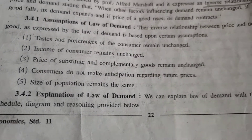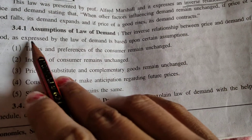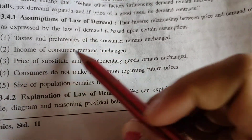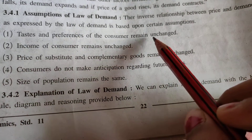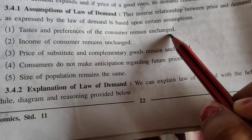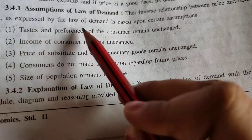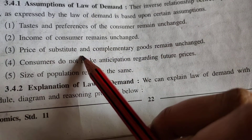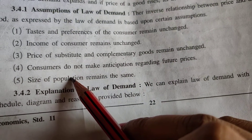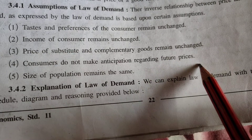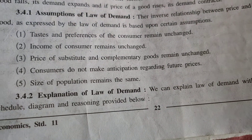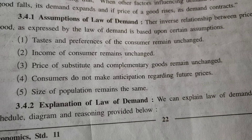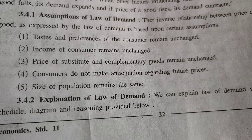Let us see the inverse relationship between price and demand by looking at some assumptions. First, taste and preference of the consumer remain unchanged. Second, income of a consumer remains unchanged. Third, price of substitute and complementary goods remain unchanged. Fourth, consumers do not make anticipations regarding future prices. Fifth, size of population also remains the same. These assumptions mean no changes occur when the law of demand is showing the relationship between price and demand.